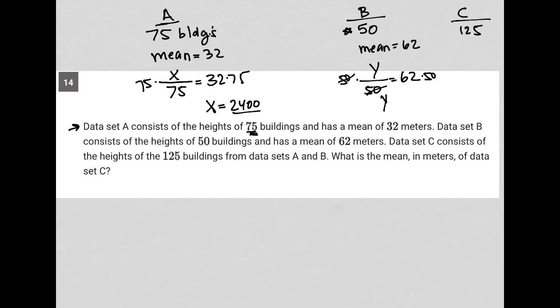So for data set C, if I were finding the mean, I would add up the heights of all 125 buildings. I now know what those heights are individually, so collectively it's just adding them together. 2400 plus 3100 is 5500, so that would be the sum of all the heights. I now have 125 buildings and I'm spreading that across in order to find the mean.